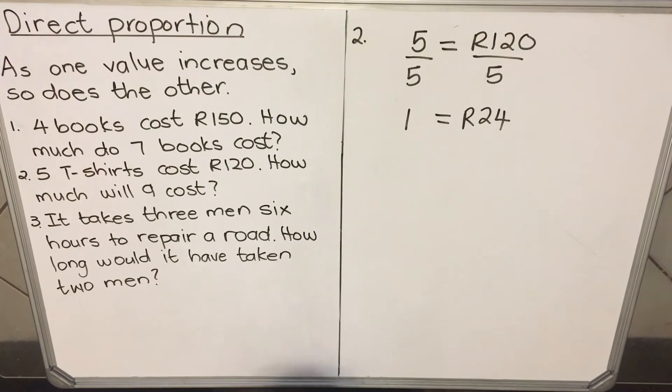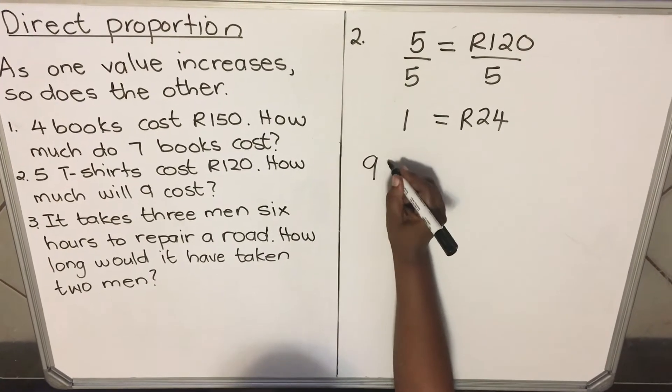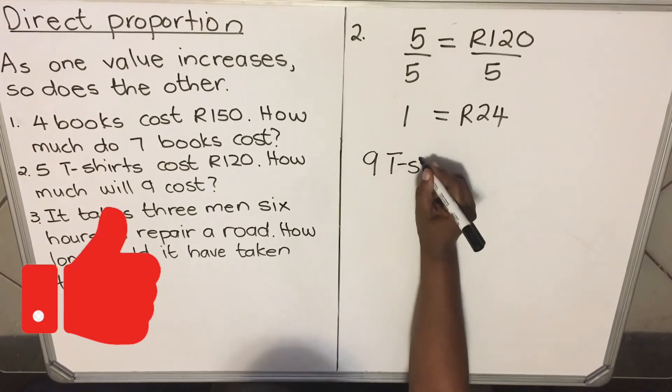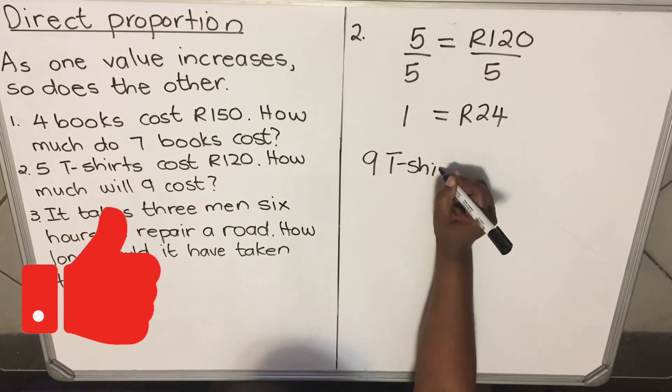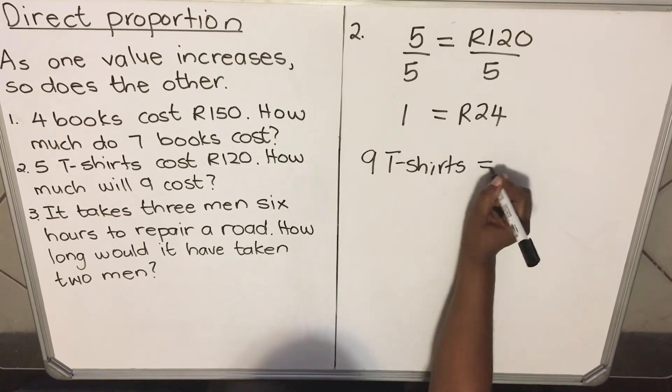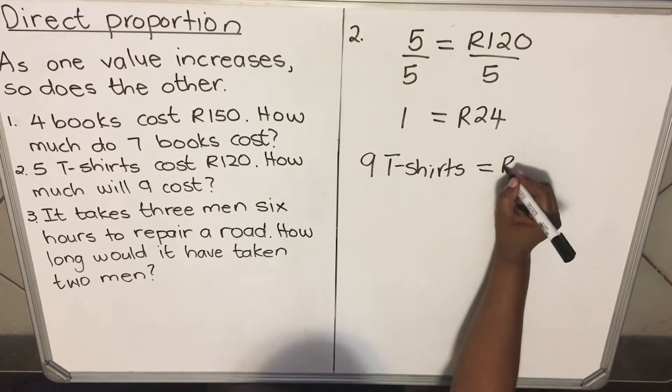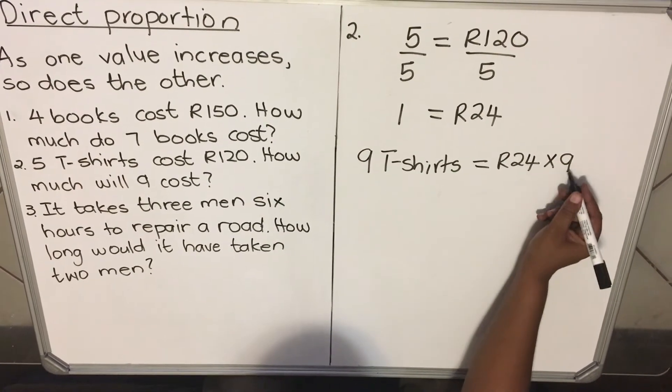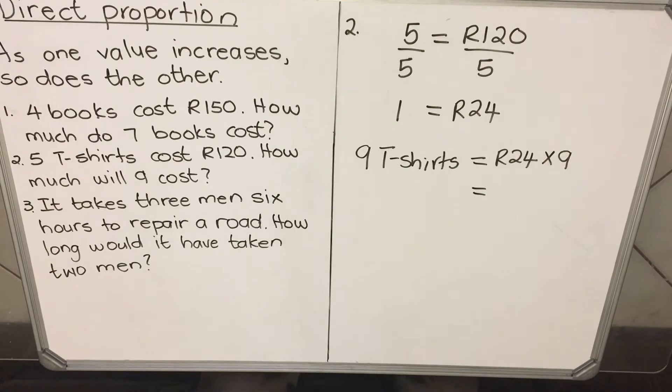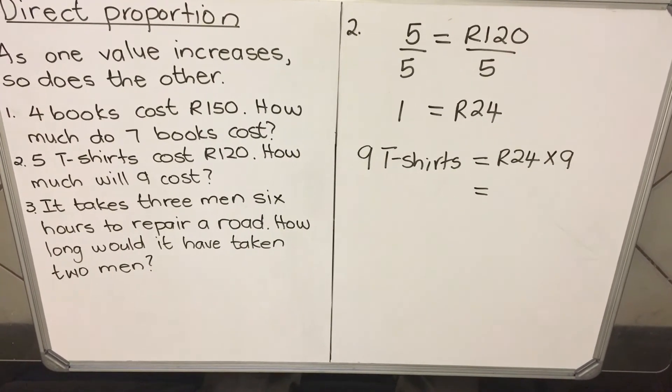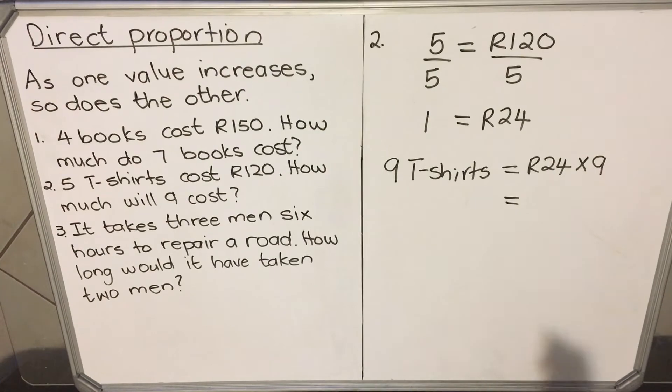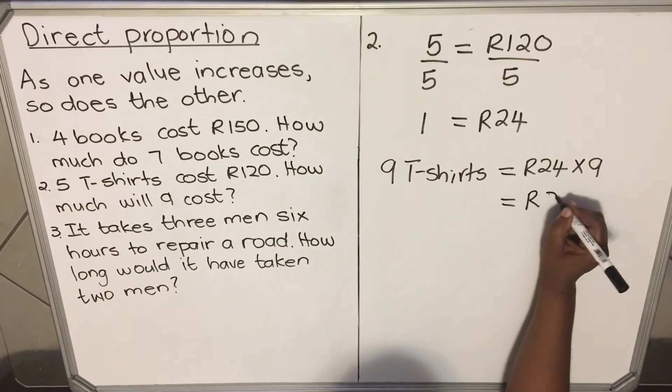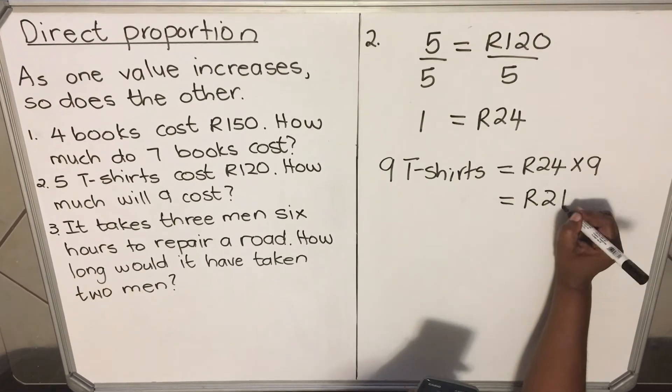Then how much will nine cost? Nine t-shirts will cost R24 times nine. If you like you can say nine times 24, it doesn't make a difference. Nine t-shirts will cost R216.